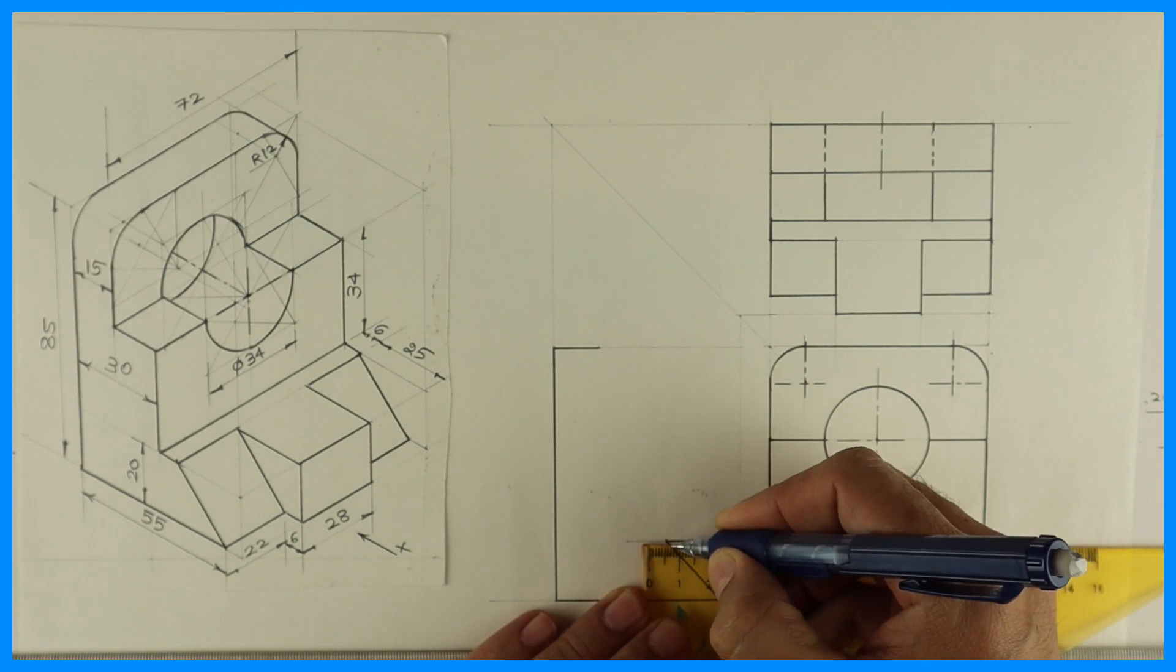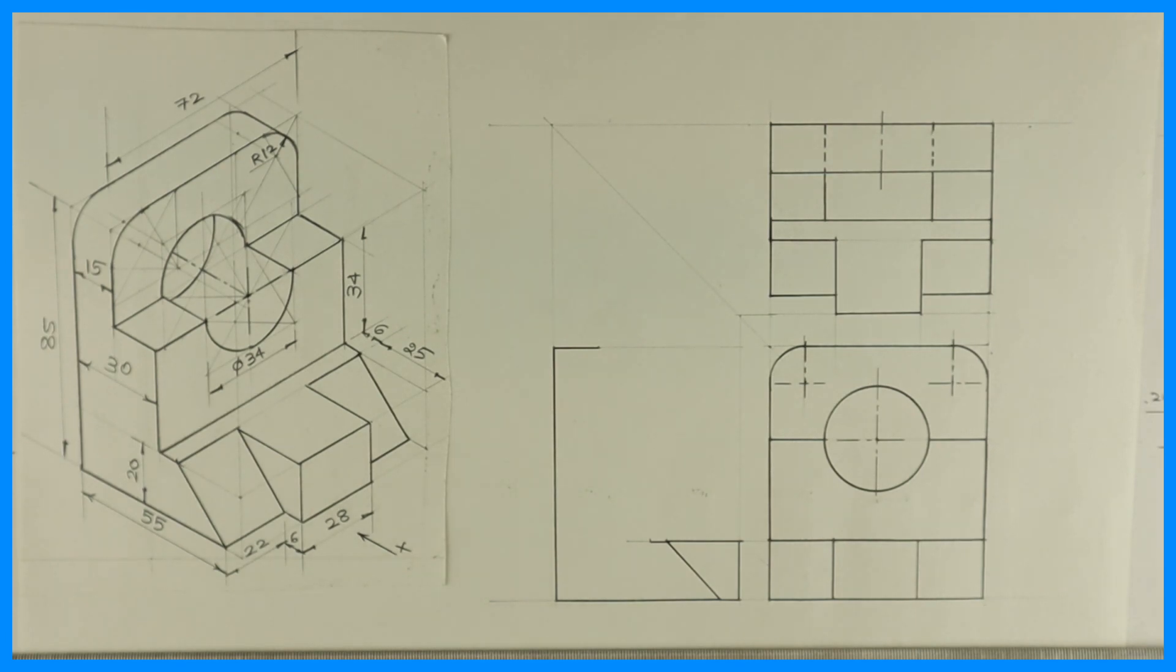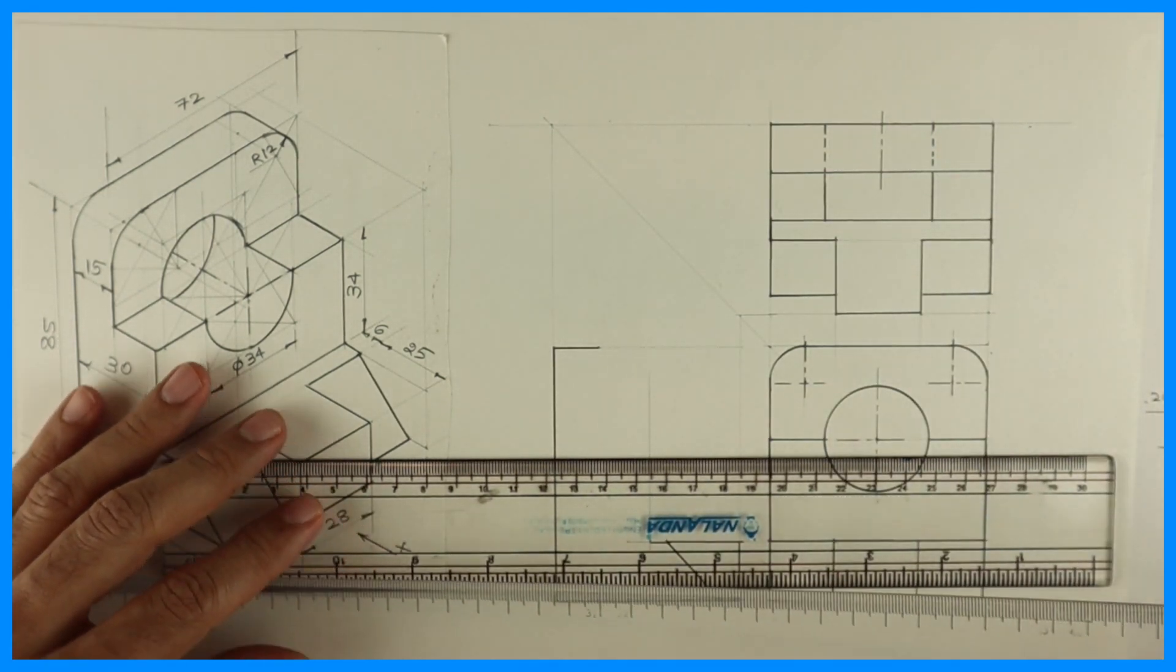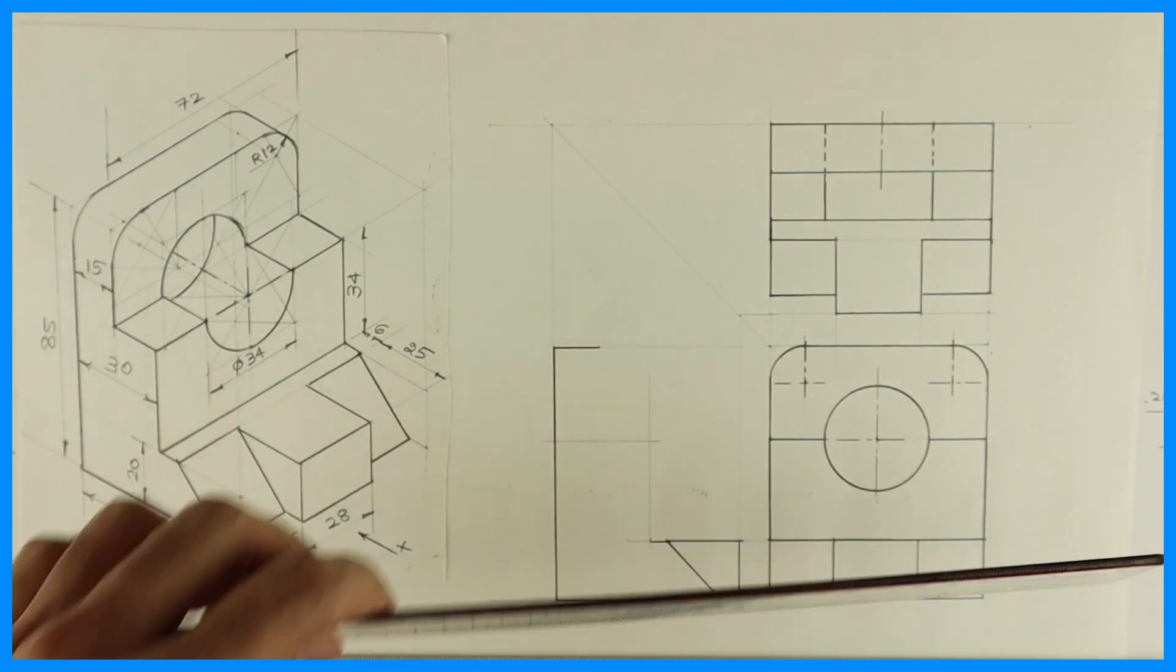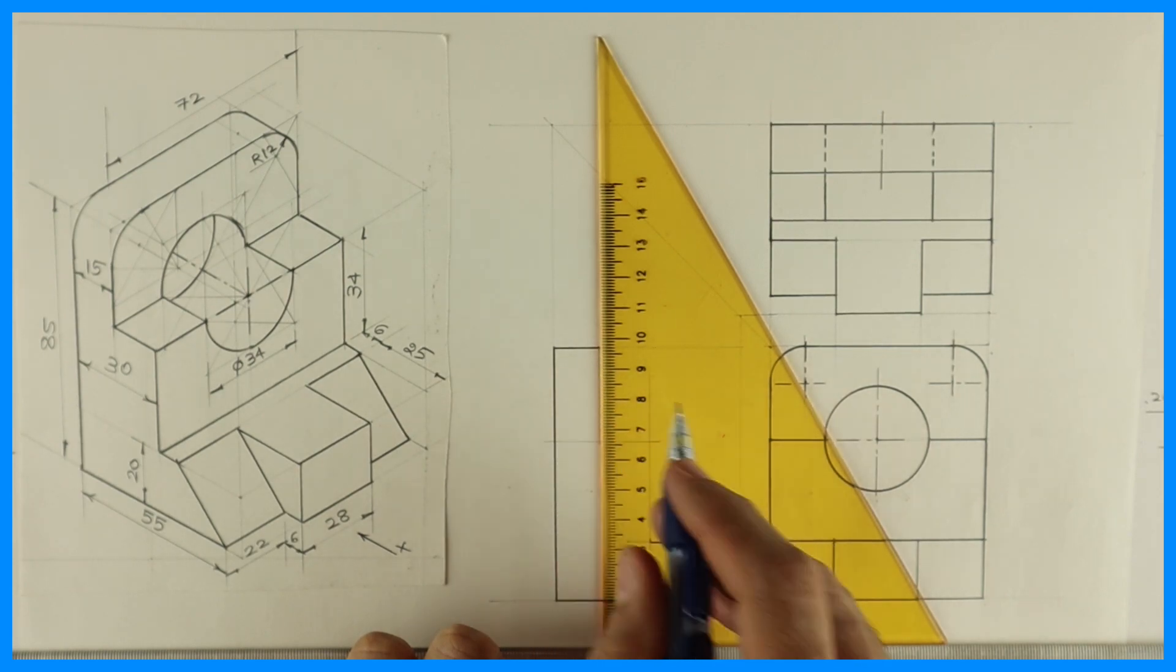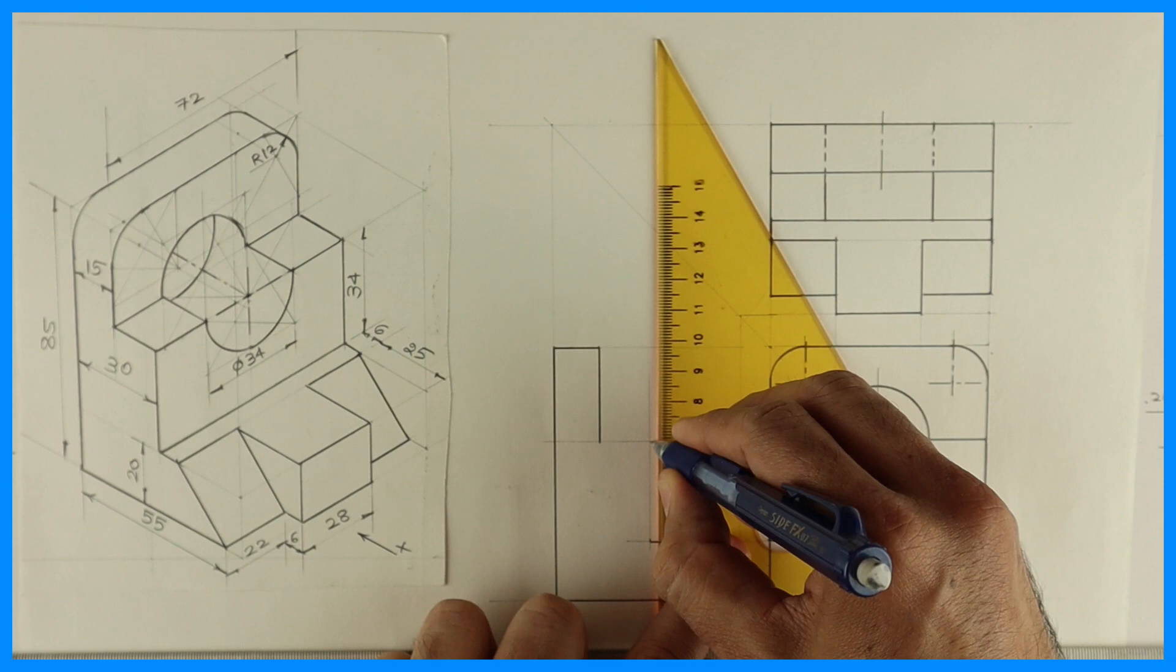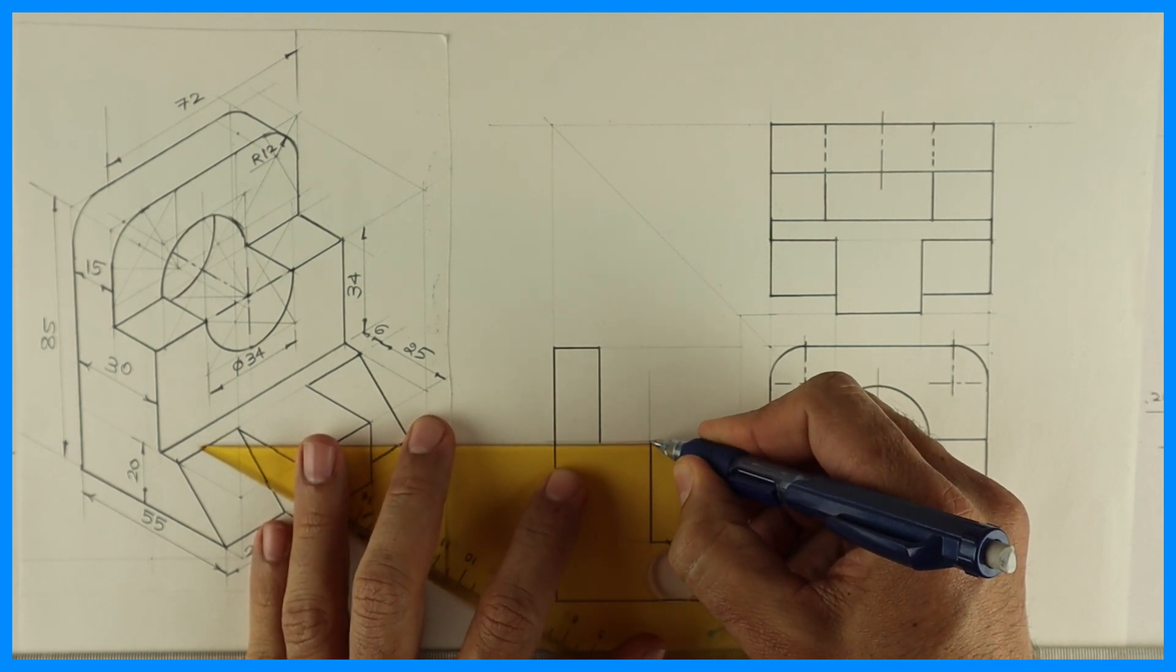Then again you take 6, go up by 34, or we can project also from front view. Then from here you draw vertical line, then from here you draw vertical line.